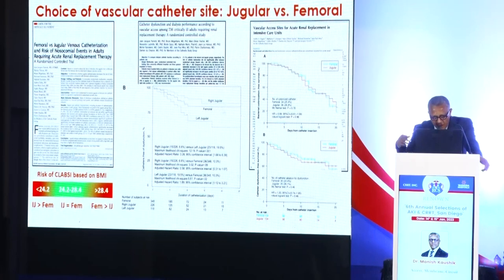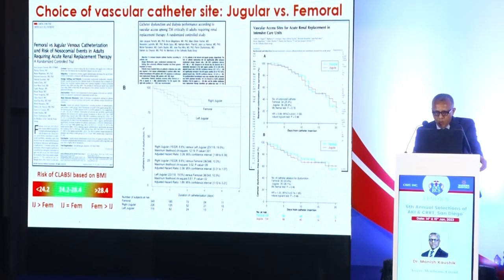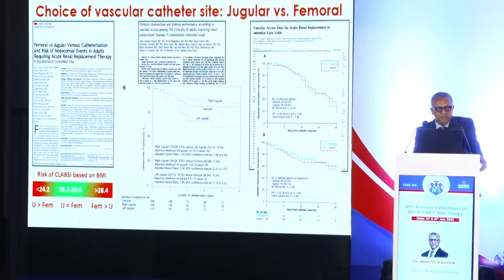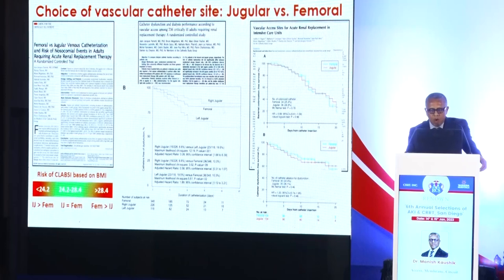Another study from the CATEVIA trial looked at 134 patients who had two catheters inserted — one in the jugular vein and one in the femoral vein. When examining catheter dysfunction and infection risk, there was no significant difference between jugular and femoral vein catheters. Overall, the jugular and femoral veins appear to function equally well, except at BMI extremes — above 28, the jugular vein catheter may outperform the femoral catheter.